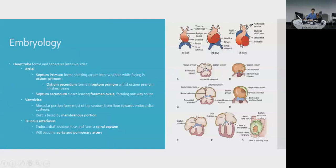Whilst the heart is twisting, the two sides need to separate, so two septums form — the atrial and ventricular septums. The atrial septum is formed by two layers. The septum primum forms first; as it closes, the hole is called the ostium primum. Then a second hole forms — the ostium secundum — which is actually within the septum primum.